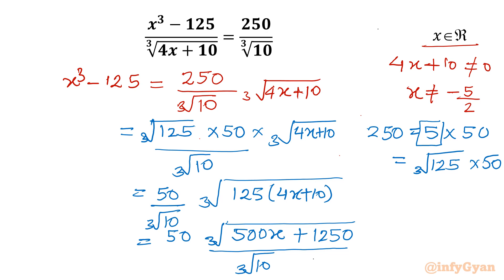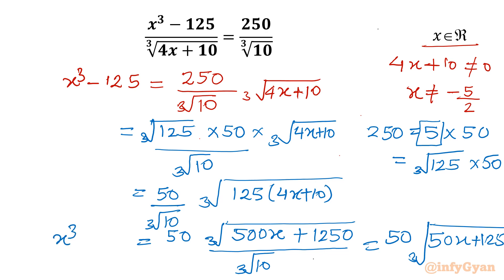You can see the cube roots combine, and the equation ultimately converts into: x³ - 125 = 50 · ∛(50x + 125).